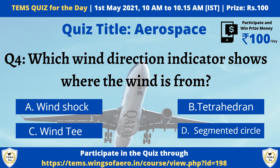Question 4: Which wind direction indicator shows where the wind is from? Option A: Wind sock. Option B: Retrohedron. Option C: Wind T. Option D: Segmented Circle. You can answer through our Temps Arrow platform. Participate in this quiz and try to win prize money of rupees 100.